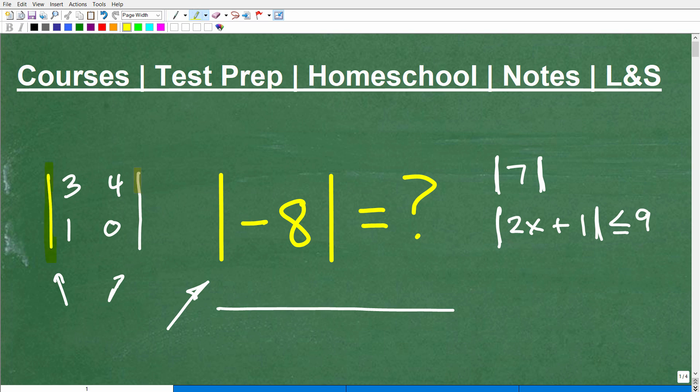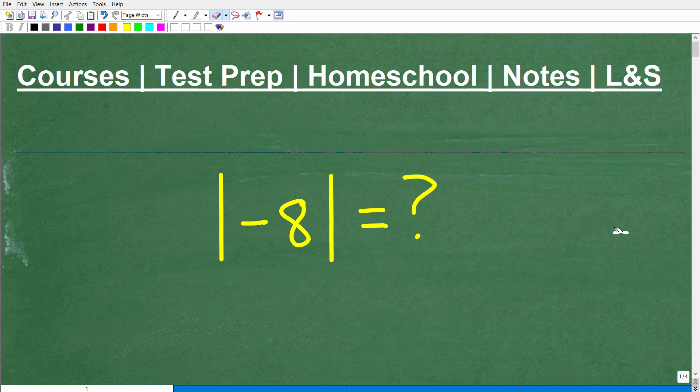This means something completely different in mathematics. This means find the determinant of a matrix. But the little bars here do look like absolute value bars, but it means something completely different. But again, if you're taking algebra 1, certainly algebra 2, college algebra, you're going to see this notation used in different ways.